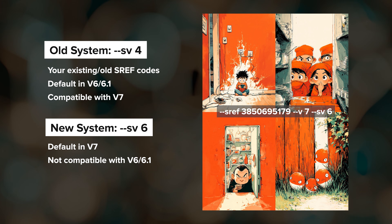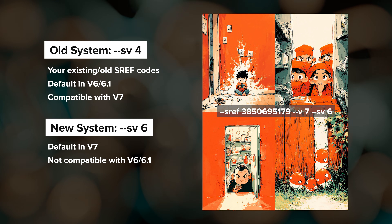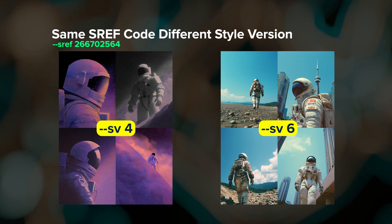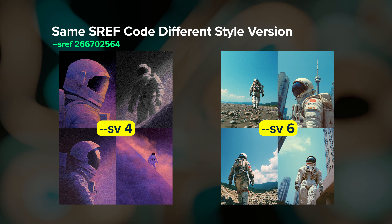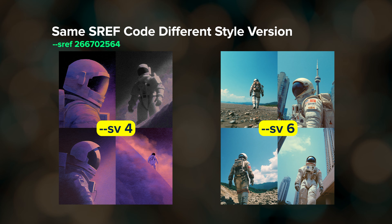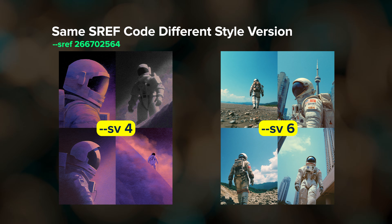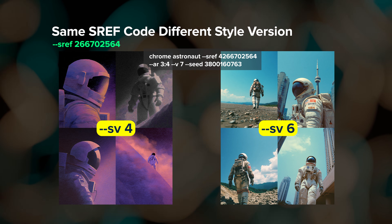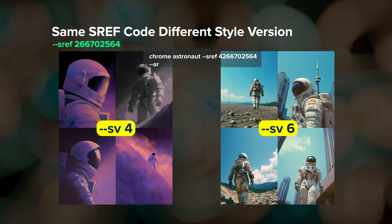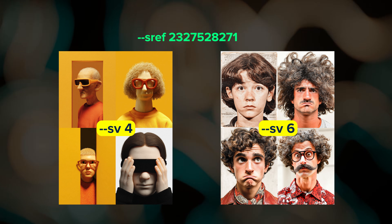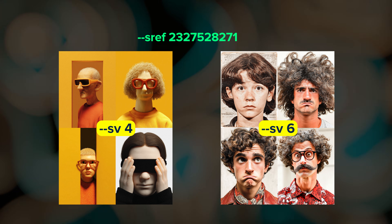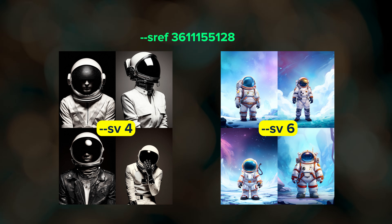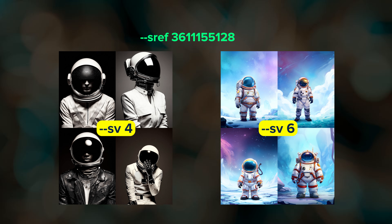Now the v7 model defaults to sv6, which is the new style reference system. There is no sv5 — not sure why that one was skipped. Here are the results from using the same sref code number: on the left I used the old style reference system sv4, and on the right I used the new one sv6. Same number, totally different styles because they're using different style reference systems. The sref code number in sv4 does not mean the same thing as that same sref code number in sv6. So if you've been trying to run your favorite sref codes and are suddenly getting different styles in your results, this is why.